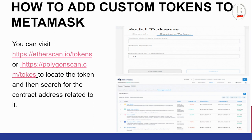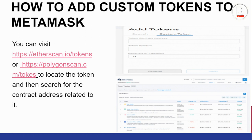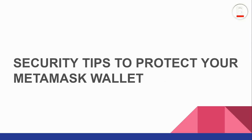To add custom tokens to MetaMask, look up the token on CoinGecko or check Etherscan.io or PolygonScan.com for the token's contract address. Once you have the contract address, paste it into the contract address field in MetaMask. The token symbol and decimal number will automatically appear. Then tap Add Token — that's how you add custom tokens to your MetaMask.